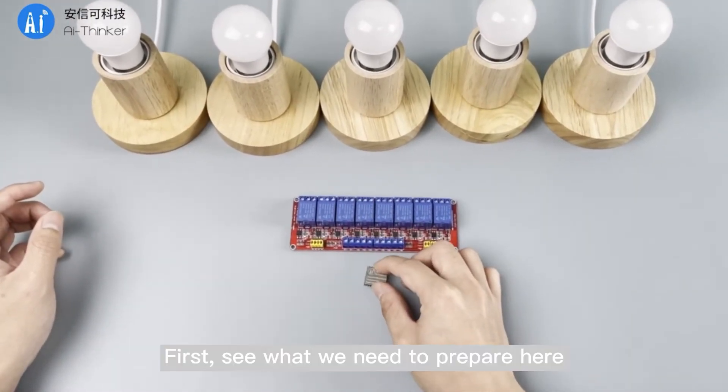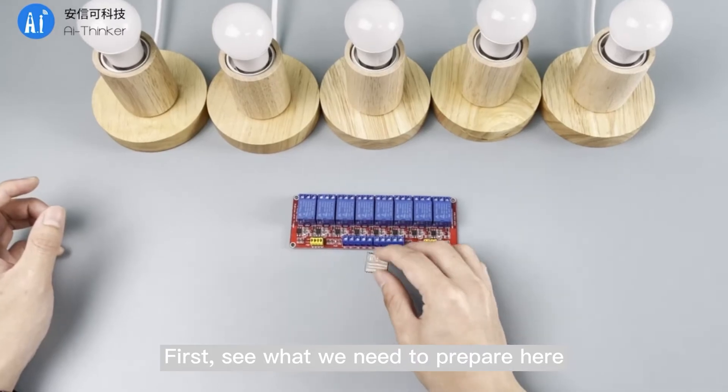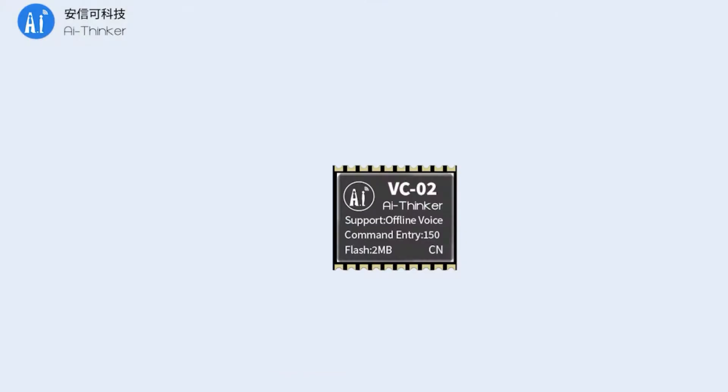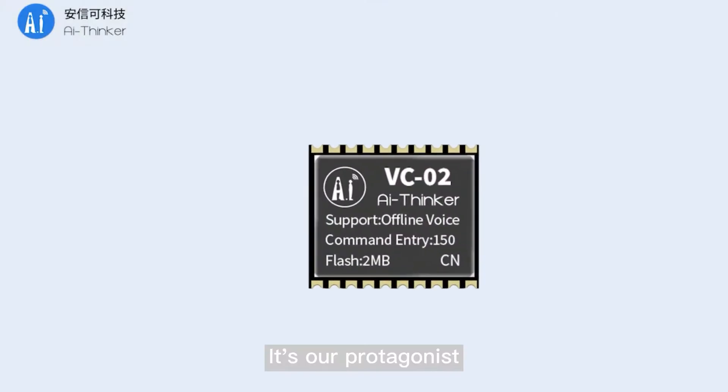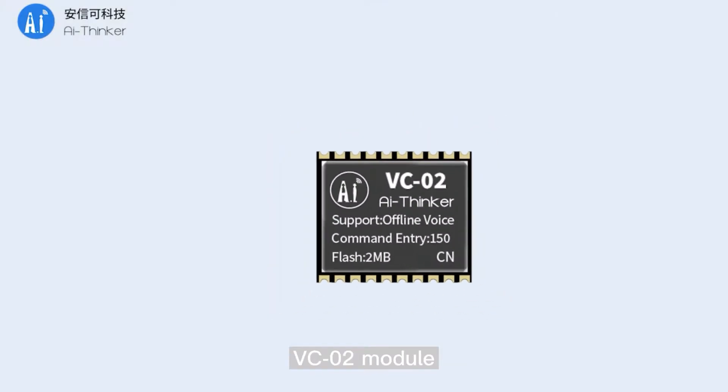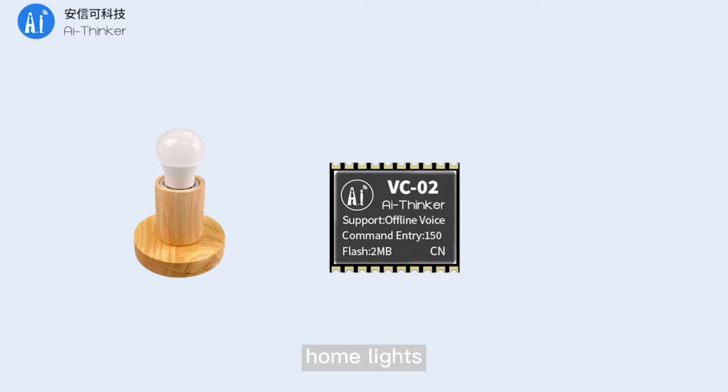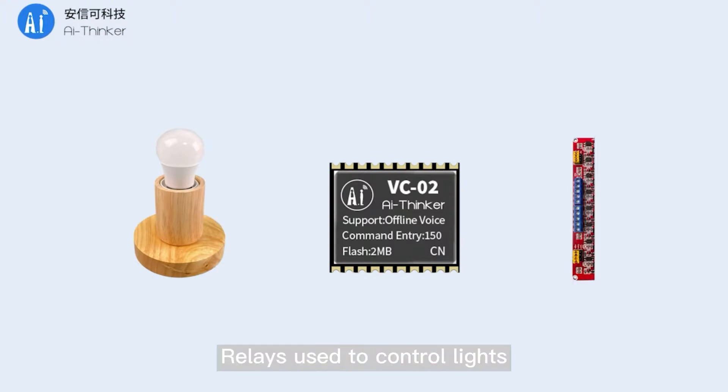First, let's see what we need to prepare. It's our protagonist, the VC-02 module, home lights, and relays used to control the lights.